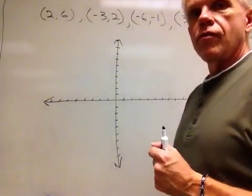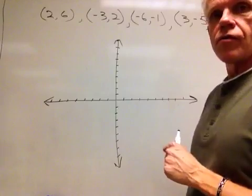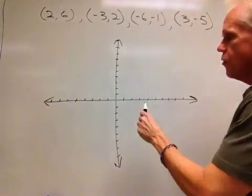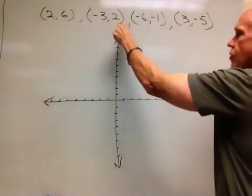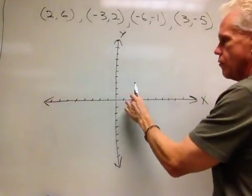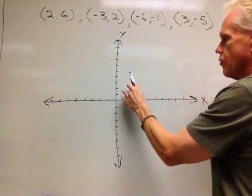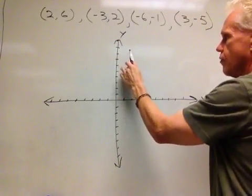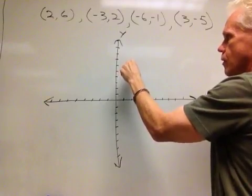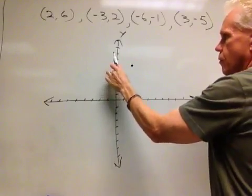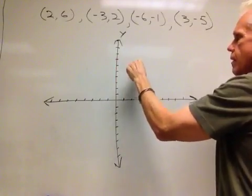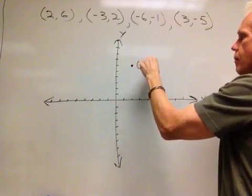Let's start off with (2, 6) as our first ordered pair. We know that this is the x-axis, this is the y-axis, so we're going to come out to 2, and we're going to go up 1, 2, 3, 4, 5, 6. So that is my first ordered pair of 2, 6.